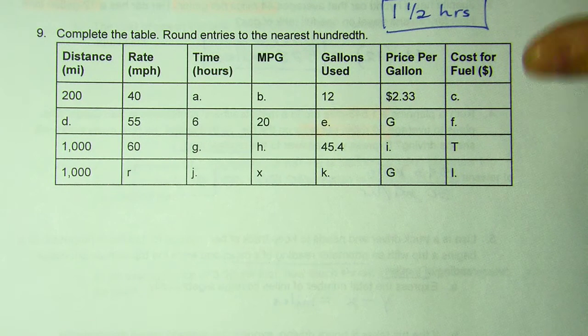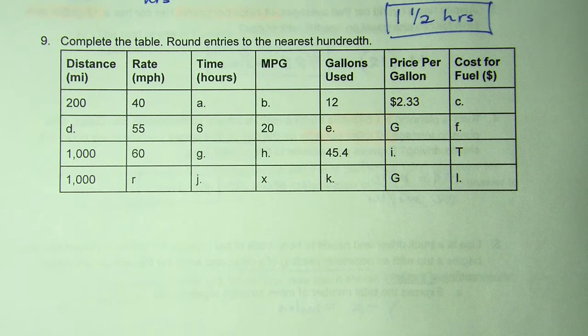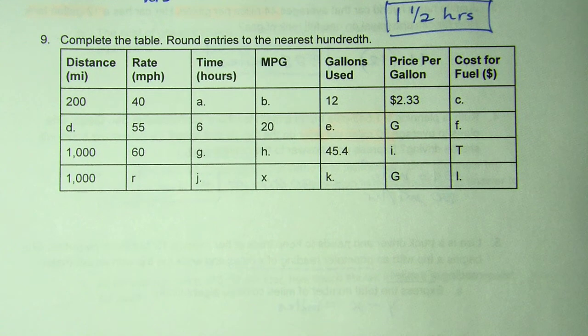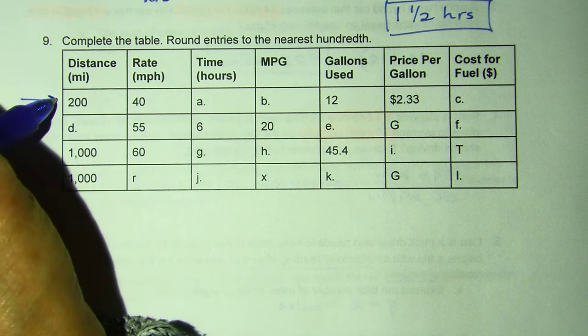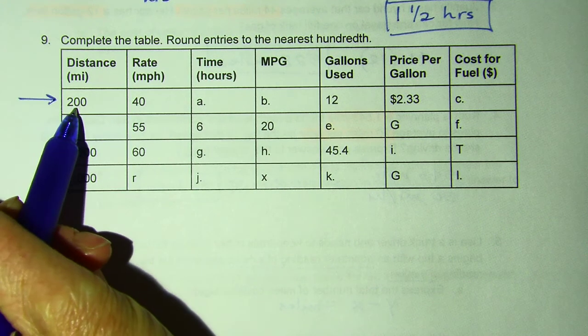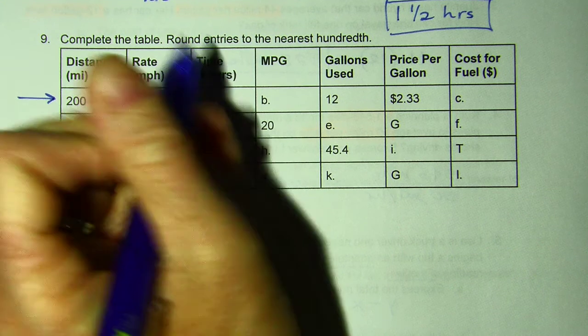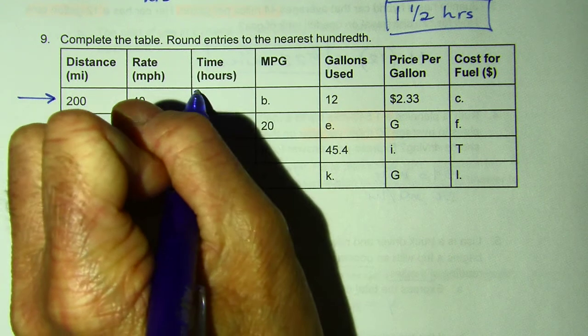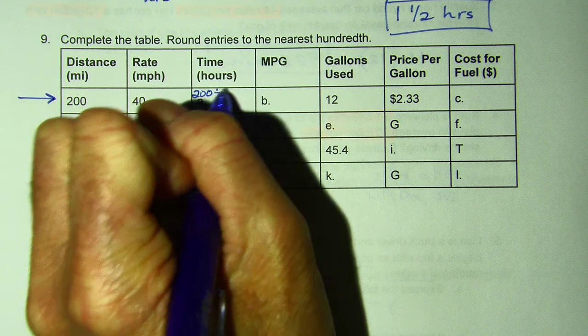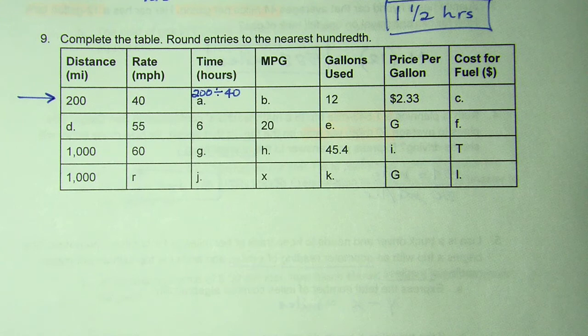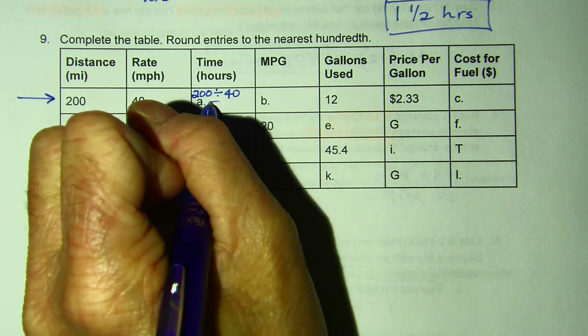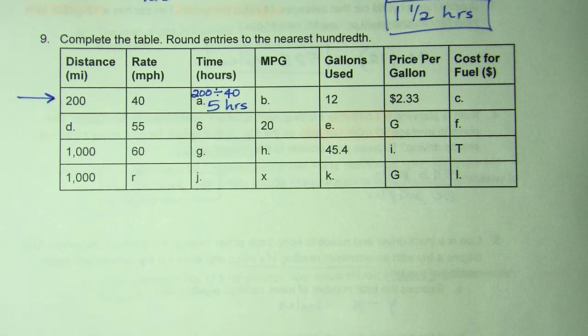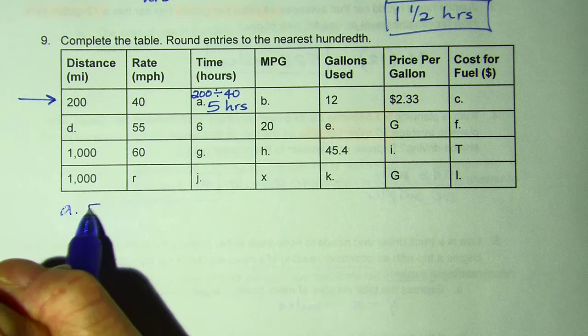So here's a table we're going to complete very similar to the one on your homework. So here we go. I'm going to do one row at a time. So row one. Here's the distance. Here's my rate. So how much time? So I would divide. So 200 divided by 40, and that gives me a perfect number of five. So five hours. So A is five hours.